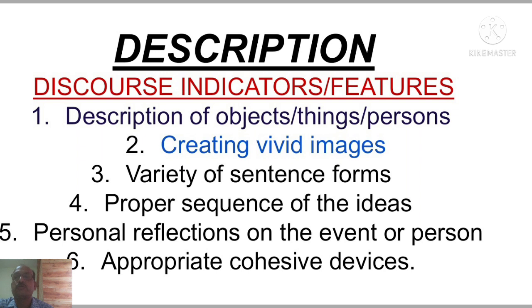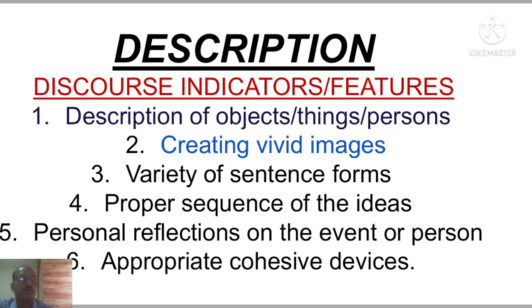Get your own ideas about the picture. Next, variety of sentence forms — you have to write a variety of sentence forms, using different sentence structures. The next indicator is proper sequence of ideas — the ideas you get in your mind should be arranged in a proper way. And next, personal reflections on the event or person — your own reflections you have to write. You also have to use appropriate cohesive devices — related ideas connected to the picture. These are all the indicators or features of the discourse description.